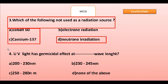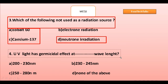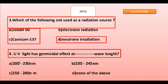Fourth question: UV light has a germicidal effect at which wavelength? Options are 202–230 nm, 232–245 nm, 252–280 nm, or none of the above. Option C is the right answer: 252 to 280 nanometers.